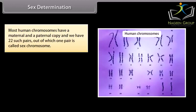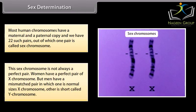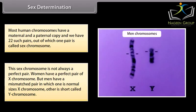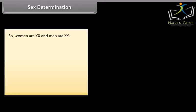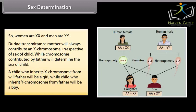Sex determination: most human chromosomes have a maternal and a paternal copy, and we have 22 such pairs, out of which one pair is called the sex chromosome. This sex chromosome is not always a perfect pair. Women have a perfect pair of X chromosomes, but men have a mismatched pair in which one is a normal-sized X chromosome and the other is a short chromosome called the Y chromosome. So, women are XX and men are XY. During transmission, the mother will always contribute an X chromosome irrespective of the sex of the child, while the chromosome contributed by the father will determine the sex of the child. A child who inherits an X chromosome from the father will be a girl, while a child who inherits a Y chromosome from the father will be a boy.